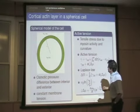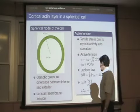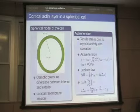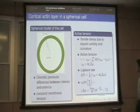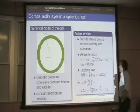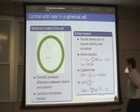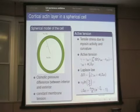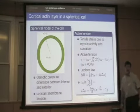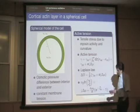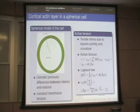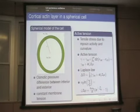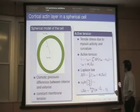In the cortical layer, there is an active stress due to myosin motors, and also a stress due to curvature — bending the gel creates curvature energy. Using the active gel theory, the answer is very simple: everything behaves as if the cell had an effective tension, which is the membrane tension plus an active tension due to the cortical layer. The active tension is just the thickness of the cortical layer times the active stress. Putting in numbers, the active tension is something like 10 times the membrane tension, so the membrane tension is negligible.